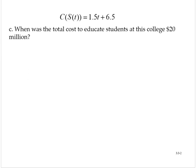Part C: When was the total cost to educate the students at this college 20 million? So here we're told that the total cost is 20 million and we're asked to find a time. When was? So we need to solve C of t equals 20.